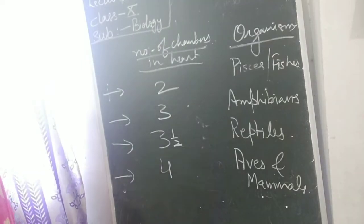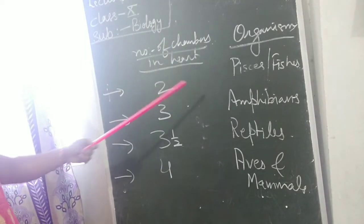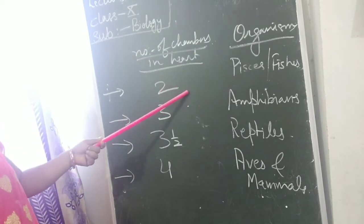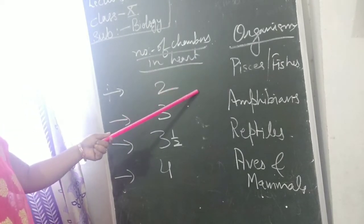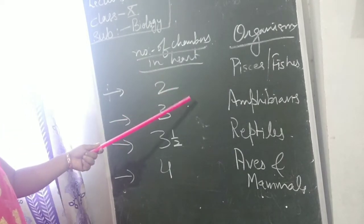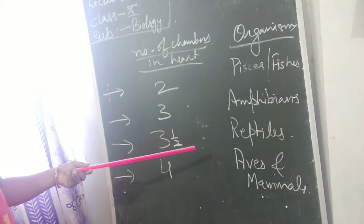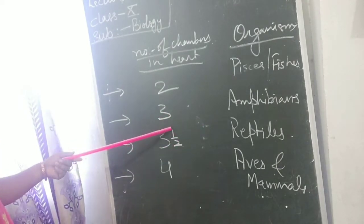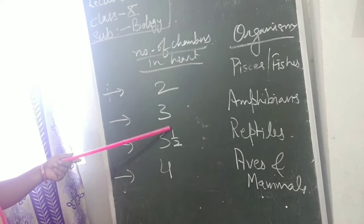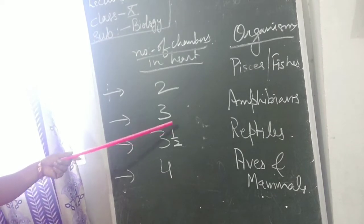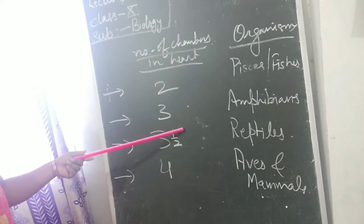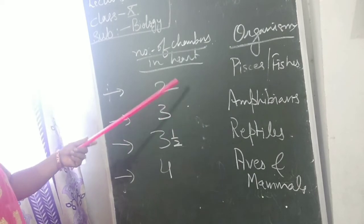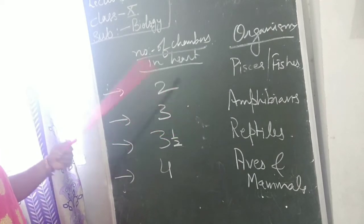On the basis of chambers, organisms can be classified. Fishes have a 2-chambered heart with 1 auricle and 1 ventricle. Amphibians, those who live on land as well as in water, have a 3-chambered heart: 2 auricles and 1 ventricle — specifically a right auricle, left auricle, and left ventricle.